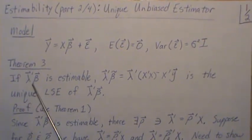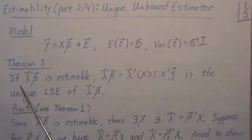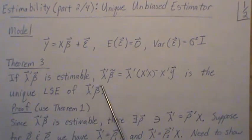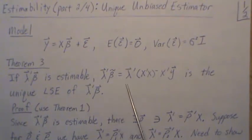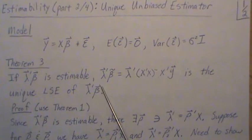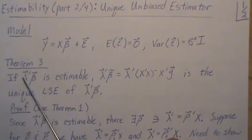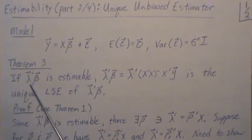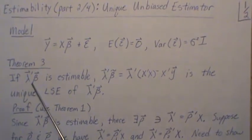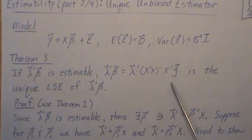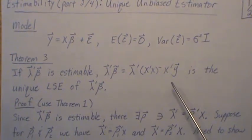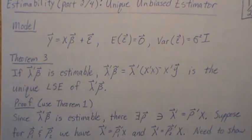In this video we're going to look at the function lambda prime beta, and we're going to assume it's estimable. Then if we plug in the least squares estimate for beta, this is unique — it's the unique least squares estimate for this linear combination of the betas, the estimable function. We're going to prove this two different ways using Theorem 1 and then Theorem 2, because mathematically it's good to have different ways to prove the same theorem in your tool bag.